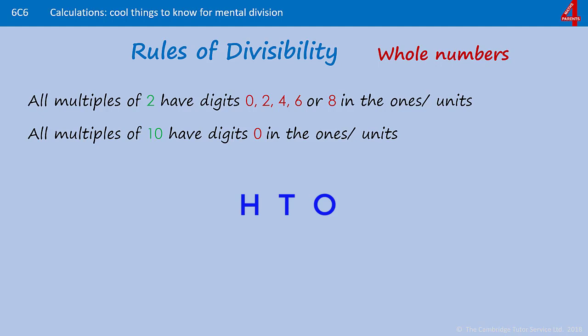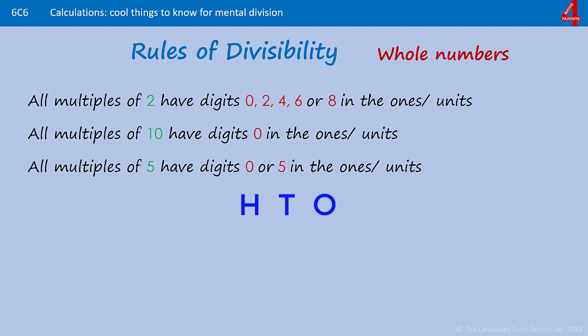All multiples of 10 have a zero in the ones or units column — 10, 20, 100, 500, 360 — they'll all have a zero in the last column, in the units or ones column.